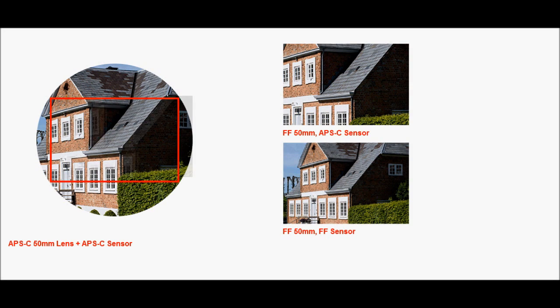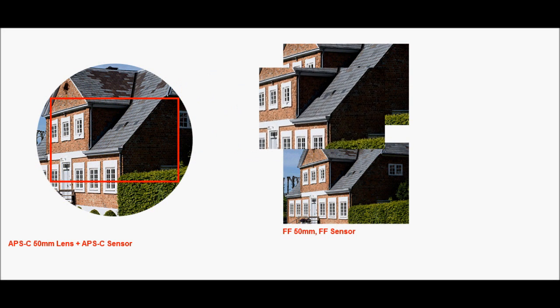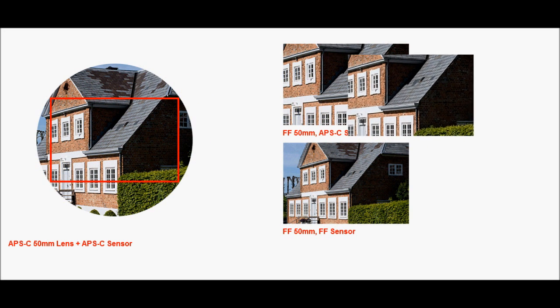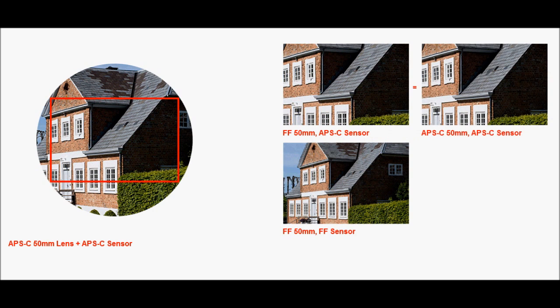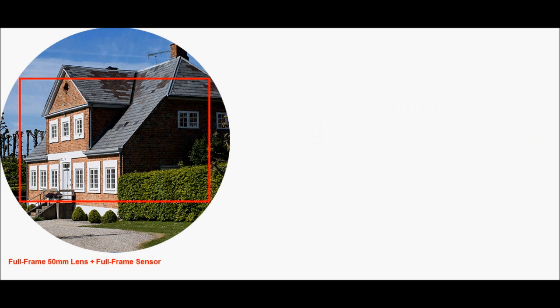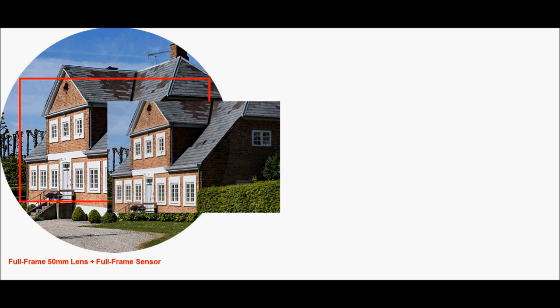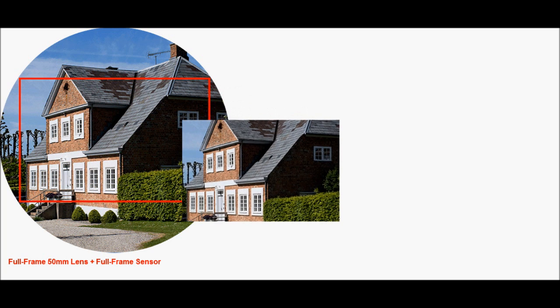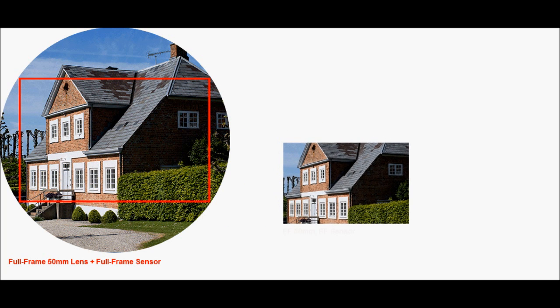Let's snap another photo now. Notice how both images taken with the APS-C camera look the same. It's important to note that this crop format lens would still have a focal length of 50mm. On APS-C, it still delivers the same field of view as the full frame 50mm, but it can be made smaller and cheaper. The only caveat is that the smaller 50mm wouldn't be usable on full frame because it wouldn't completely cover the larger sensor.